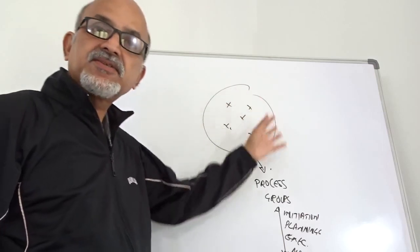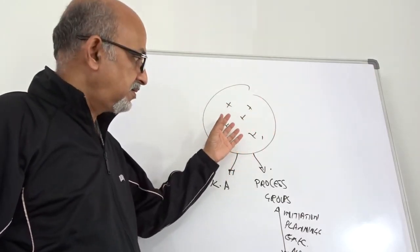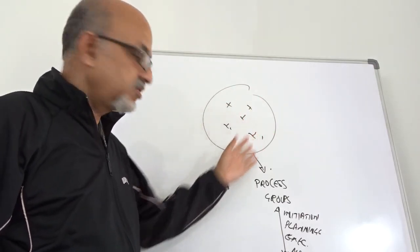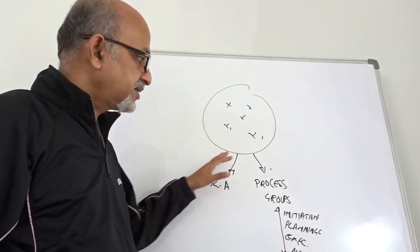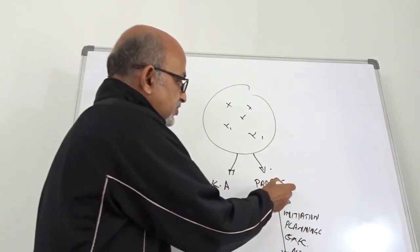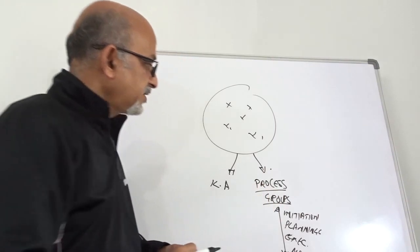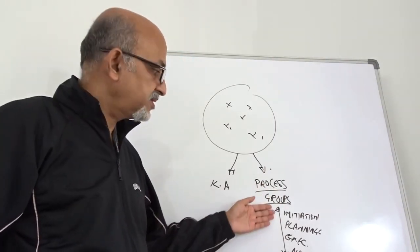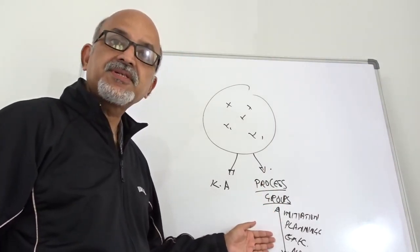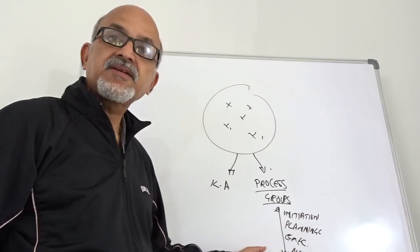To summarize, the PMBOK comprises a set of processes grouped into knowledge areas and process groups. These process groups comprise initiation, planning, execution, monitoring and controlling, and closing.